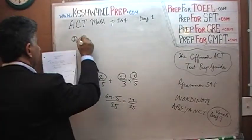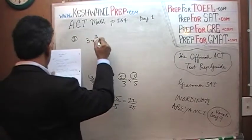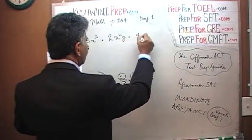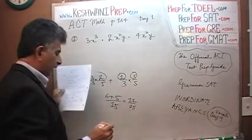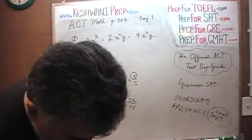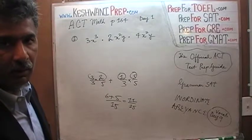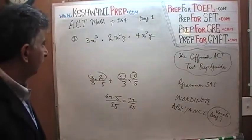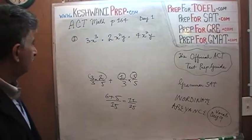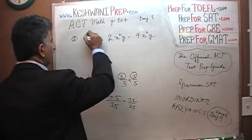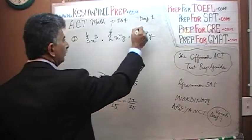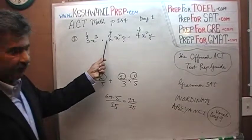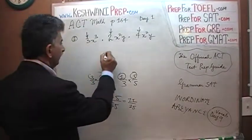In number 2, we are given the expression 3x³ times 2x²y times 4x²y, and we are simply asked to simplify it — to find the equivalent product of these three quantities. We have 3 times 2 times 4: 3 times 2 is 6, and 6 times 4 is 24.